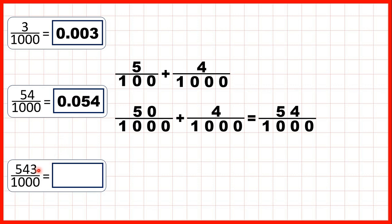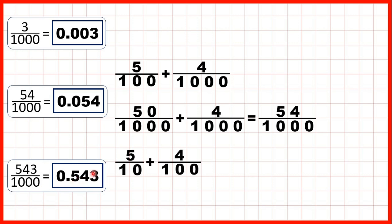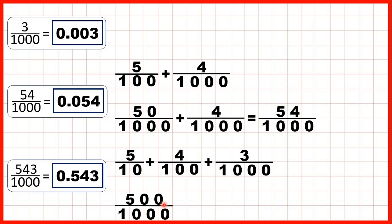Then we had 543 thousandths, which is 0.543. As a decimal that's written with five in our tenths column, four in our hundredths column, and three in our thousandths column. But five tenths is equivalent to five hundred thousandths, because we can use multiplication to find equivalent fractions: ten times a hundred is a thousand, and five times a hundred is five hundred.